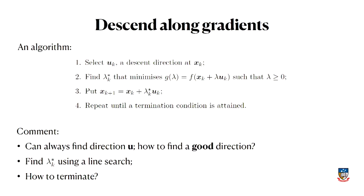There's always some direction u. If you're standing on the surface of a convex function, you can always find a downhill direction. In fact, there are gradient descent methods that randomly choose a direction and check if it's bigger or smaller. The question is how to find a good direction — a really steep direction that takes you downhill quickly.